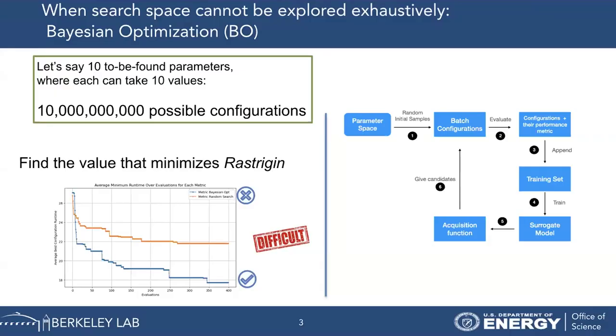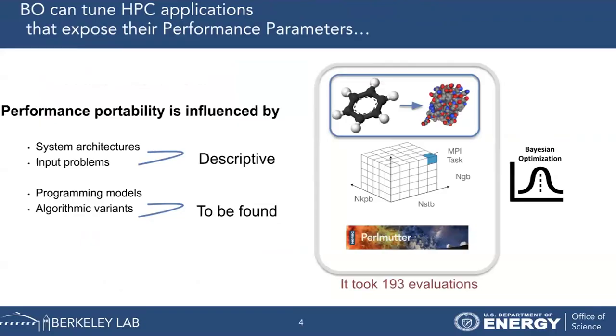Bayesian optimization is so good because it only evaluates the smallest but most meaningful set of configurations. On the right side, we see its workflow. We start with a small dataset of random configurations and train a surrogate model — usually a Gaussian process — which predicts the runtime for a given configuration. We pass this to an acquisition function that selects the next configuration to explore, repeating over many iterations until getting the solution.